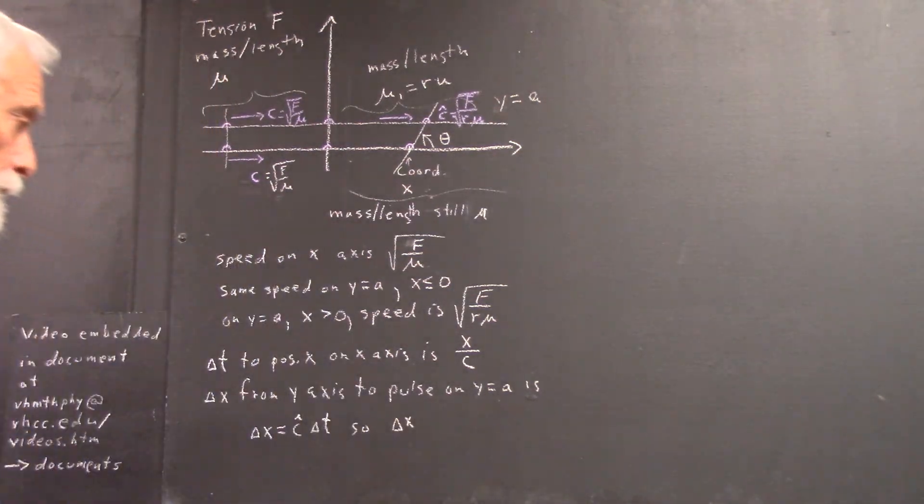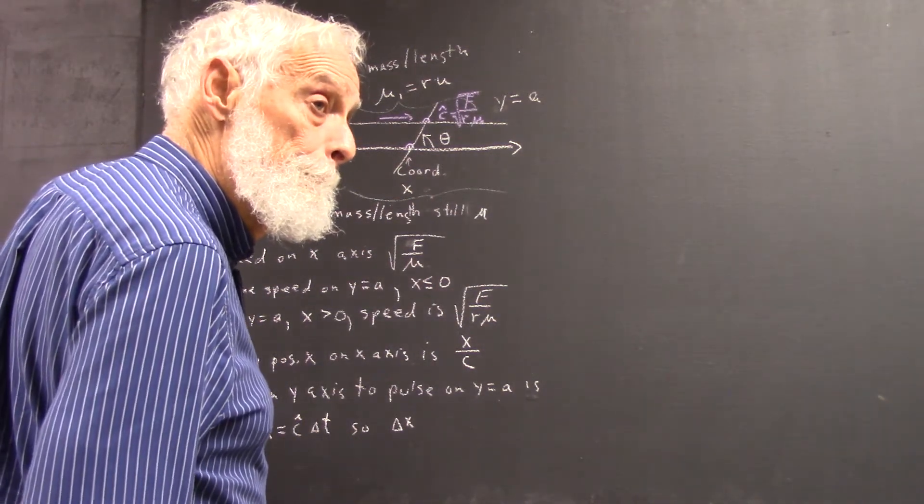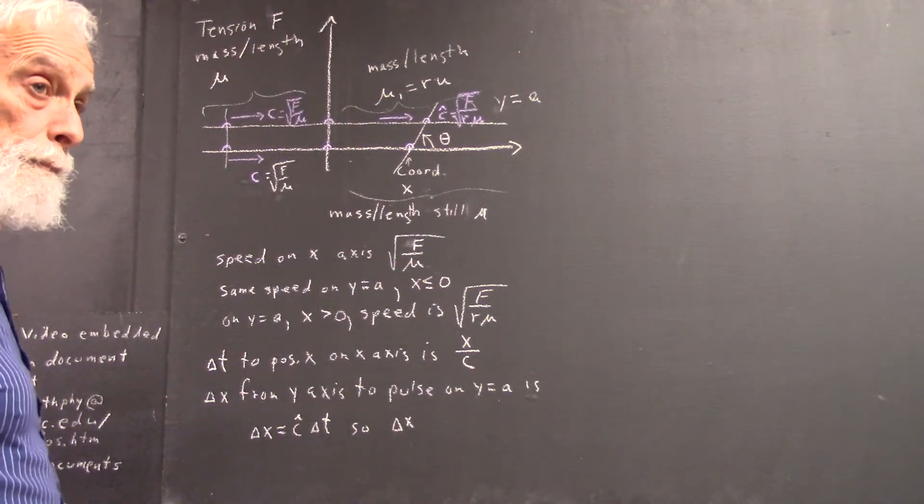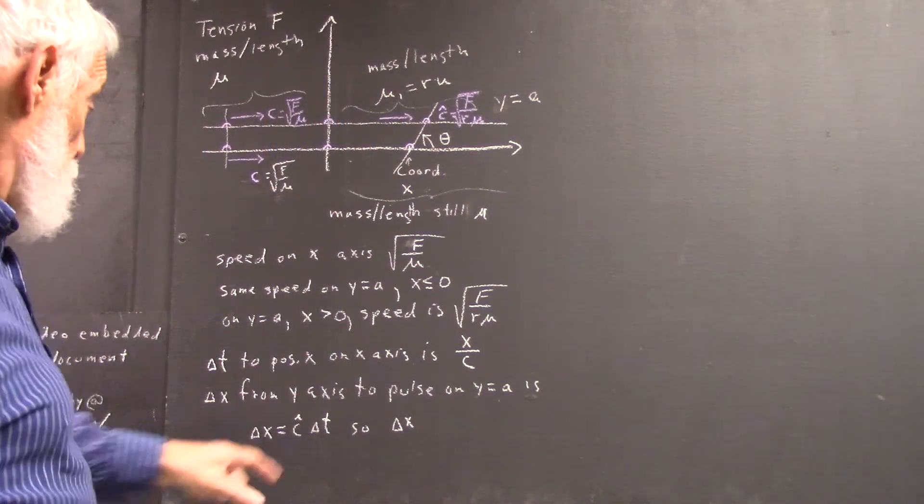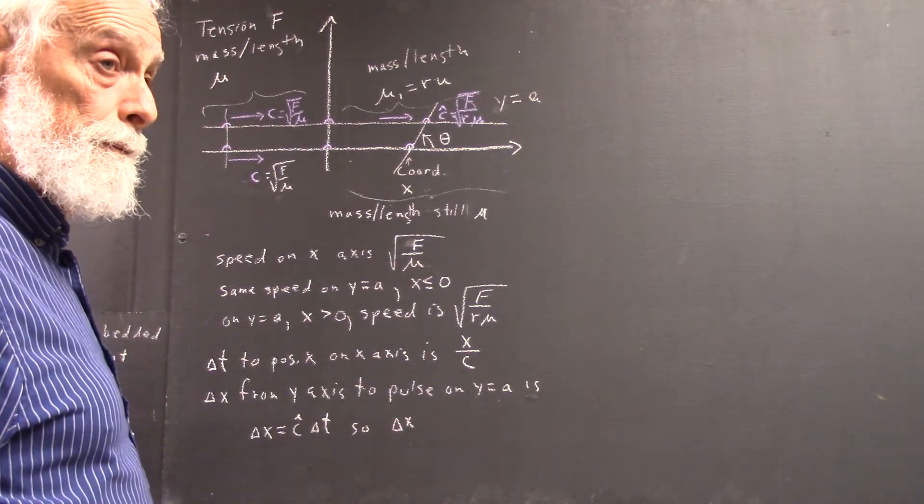So delta x is going to equal— I'm sorry? For delta t, would it be from the origin to x, right? Yeah, well, that distance is x. But we started behind the y, or behind the origin.